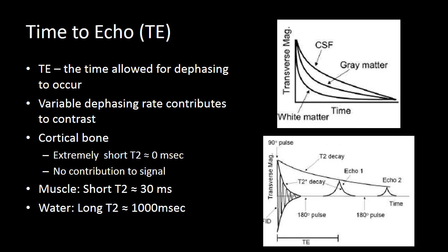When we think about our time to echo, the TE is how long we are going to allow our protons to dephase before we try to refocus them or cause them to go back into phase. We do that either with our 180-degree pulse or with gradient switching. The variable dephasing between different tissue types contributes to the T2 contrast.